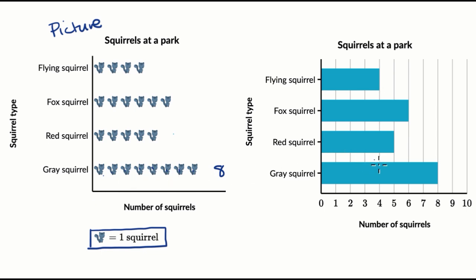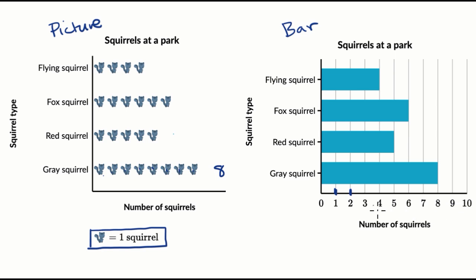We could also use this graph on the right, which is called a bar graph. Why? Because you have these bars to show how much of each type of squirrel you have. With a bar graph, this one has it nicely numbered where we see that each line increases by one — we go from one, two, three, four, five, six, seven, eight, nine. Sometimes it's not labeled as neatly, and sometimes each of these vertical lines might represent two or three or four. So it's always good to check, but this one's pretty straightforward.